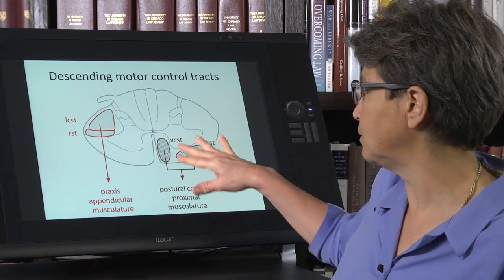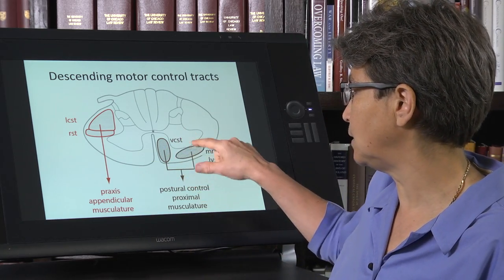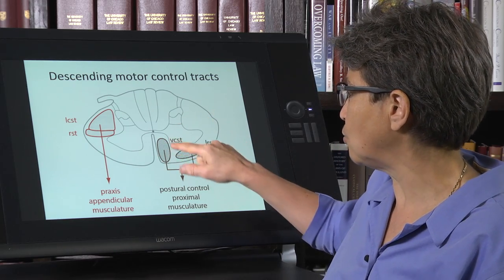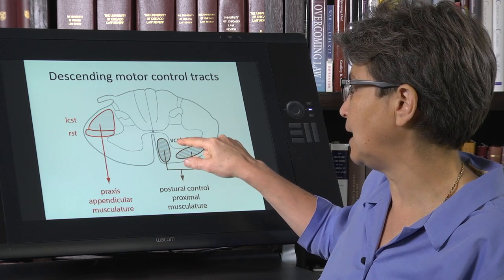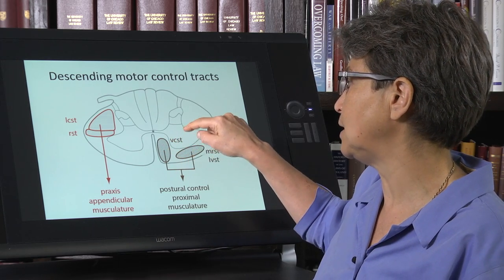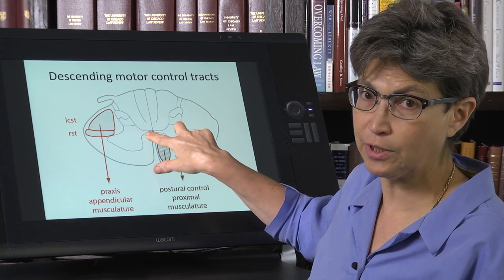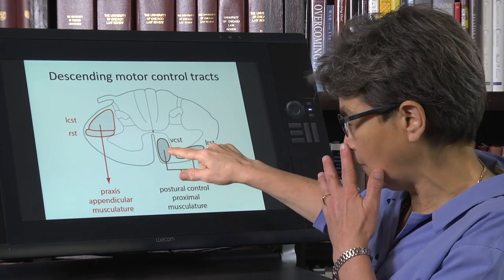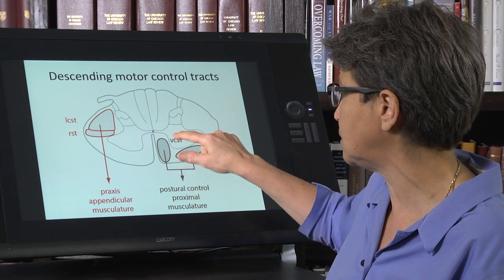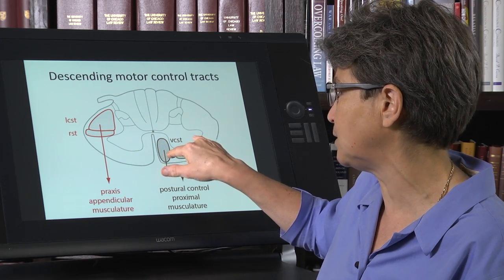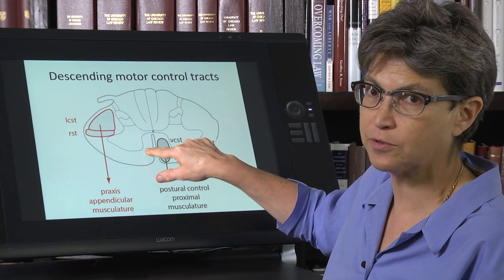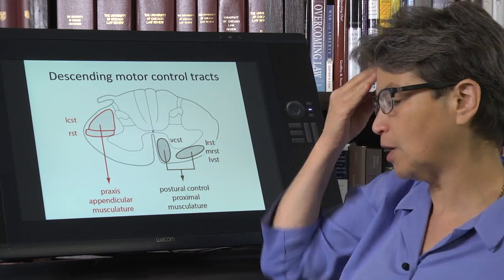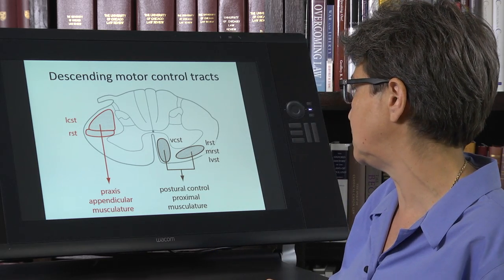And the ventral corticospinal tract may engage brainstem pathways as well. And so the ventral corticospinal tract is going to end on motor neurons on both sides bilaterally. So lesions here don't have a big effect because if this side is lesioned and both sides lose their innervation from this side, they're still innervated from the other side. So ventral corticospinal tract lesions are pretty difficult to detect.